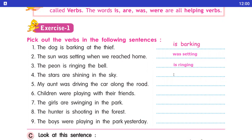Number four: the stars are shining in the sky. Stars sky mein kya kar rahe hai? Shining. Aur jo are hai humara helping verb hai, shining humara main verb hai.